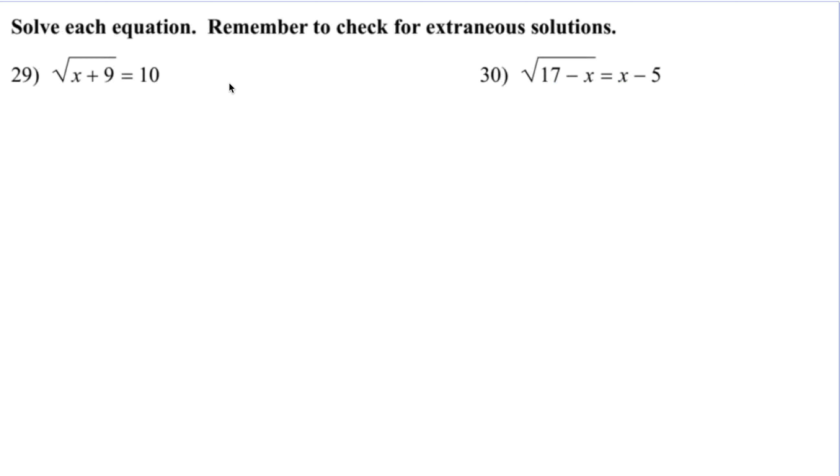And then moving on to solving equations with radicals. Remember to check for extraneous solutions. This happens when you square both sides. So remember the idea for this is we want to isolate the radical, which means get it by itself on the side, which in both cases, they're like that already.